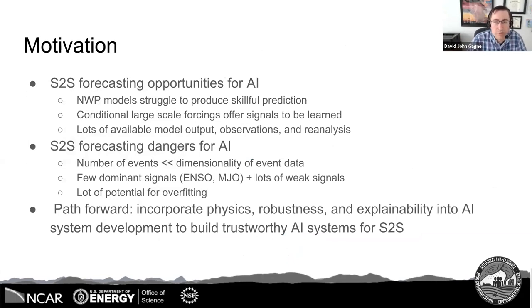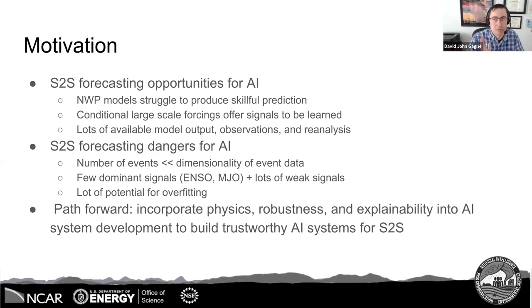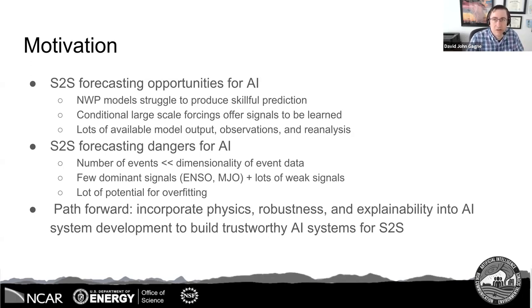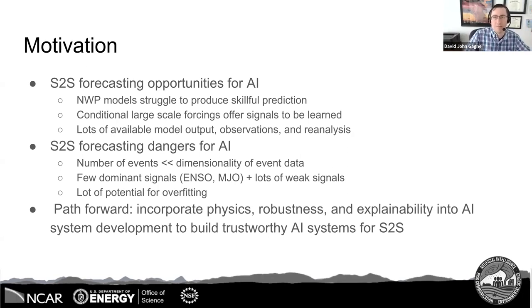So why are we interested in Trustworthy AI for S2S? Based on a lot of research in recent years, S2S forecasting provides many opportunities for AI to potentially improve prediction at longer lead times, especially because our NWP models struggle to produce skillful predictions in the S2S framework — we're getting into a regime where chaos overwhelms initial condition signals, and there are large-scale forcings that offer predictability, but how well they're captured is still an active area of research.